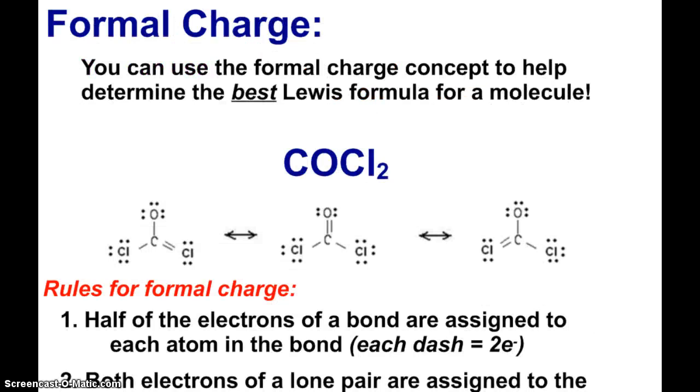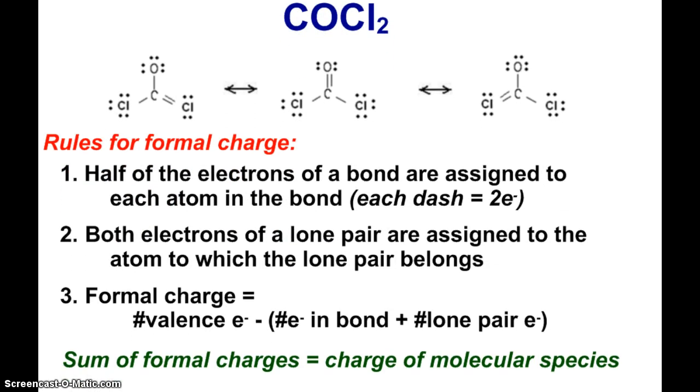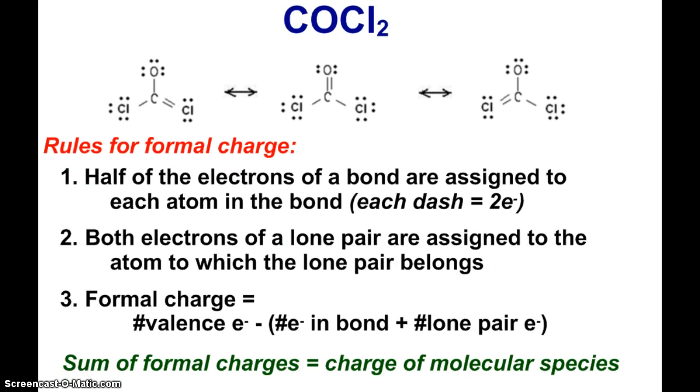Now, in combination with the resonance, we can look at this concept of formal charge. If you want an official definition of this, you can look at page 355 of your book. But essentially, we can use formal charge to determine the best Lewis formula for a molecule between the resonance structures. And so here we have COCl2 again. We worked with this molecule in the last little video when we were first showing Lewis structures. And here are three resonance structures that are possible for COCl2. I had mentioned back then that we really can't form a double bond with chlorine, and that's normally true. But technically speaking, we could draw these three different resonance structures.